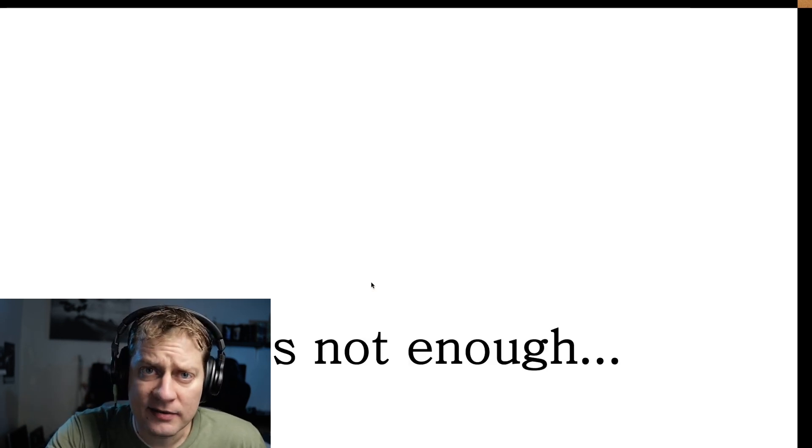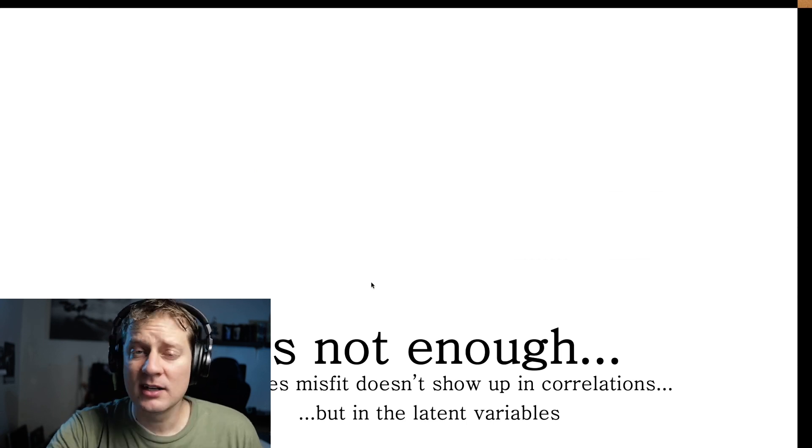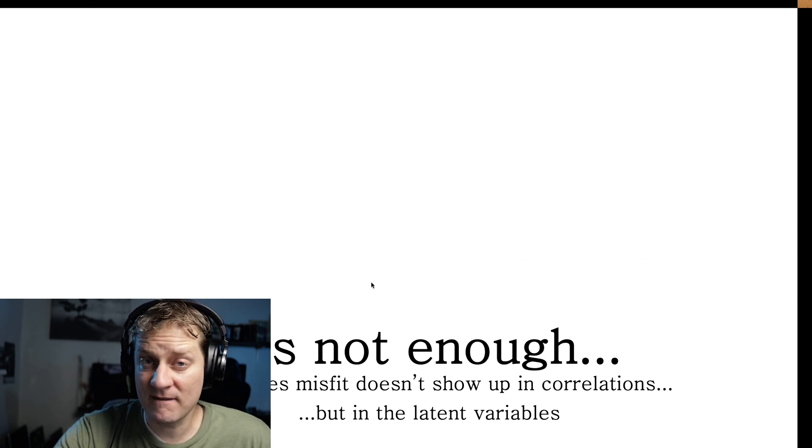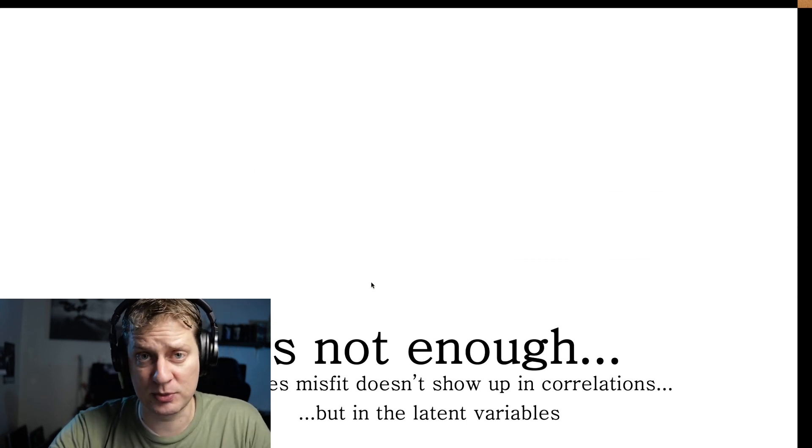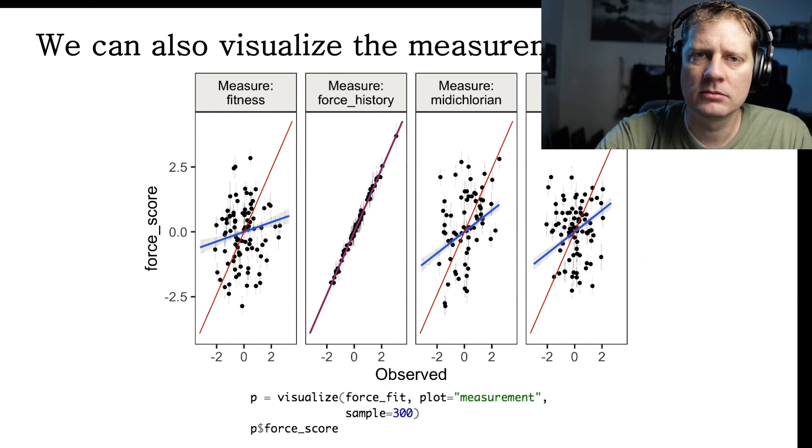But that is not enough because sometimes misfit doesn't show up in the correlations, but in the latent variables. In other words, sometime you can have a model that reproduces the correlations very, very well, but there's still a massive problem in the model. If you want to see an example of that, I'm going to link the paper in the description. So in that situation, my head is too big, metaphorically and otherwise. Moving on, I guess.